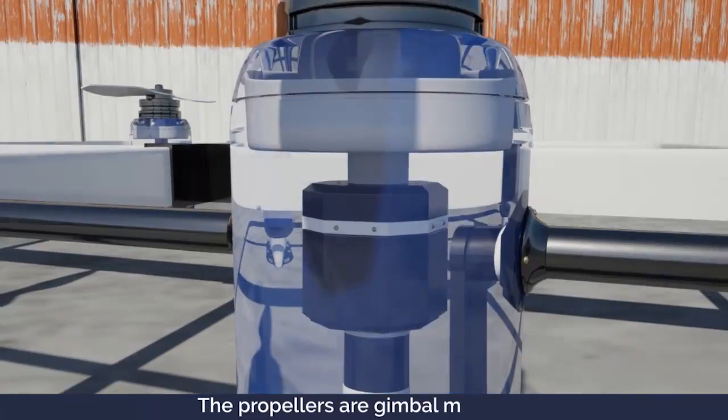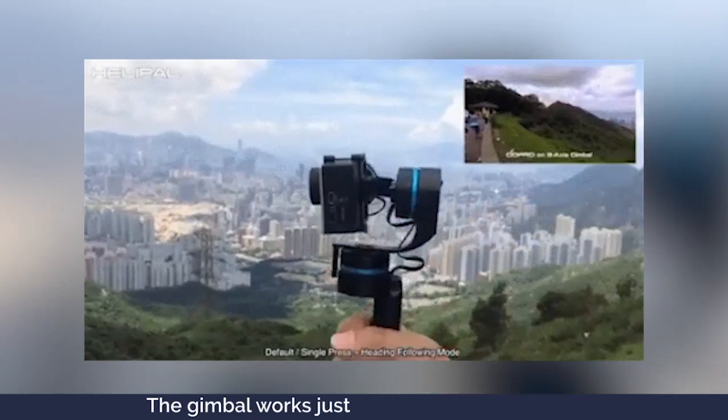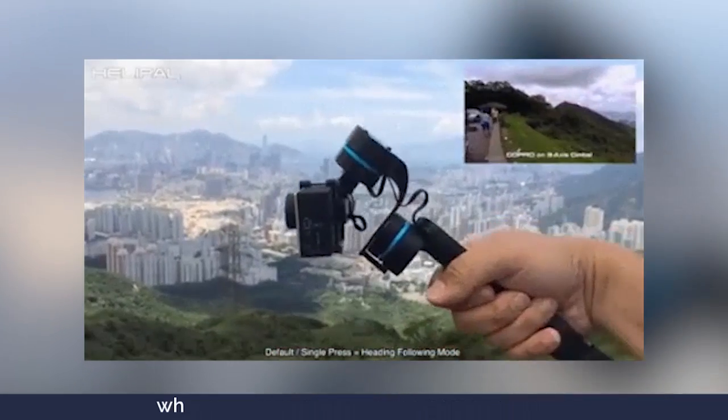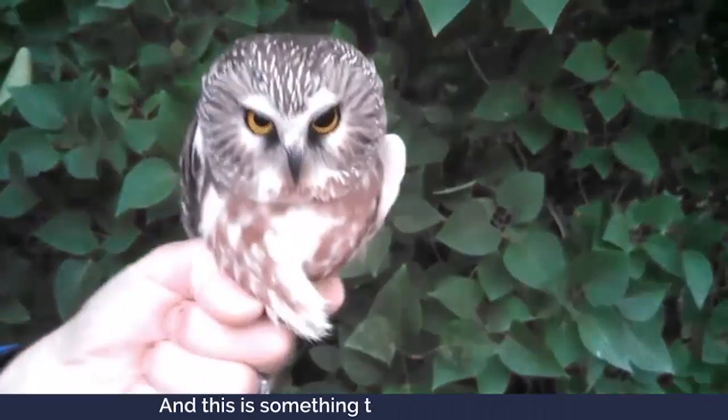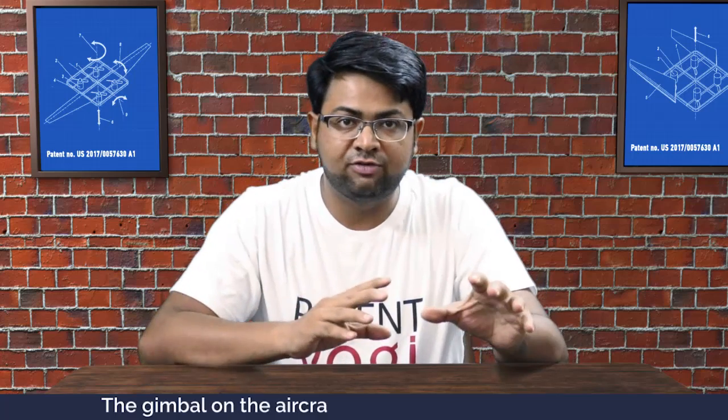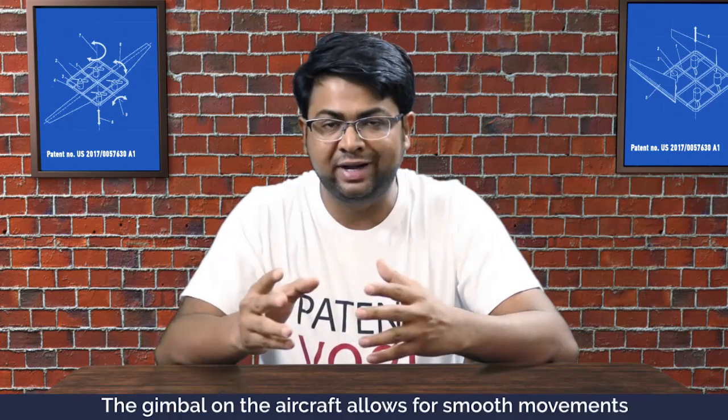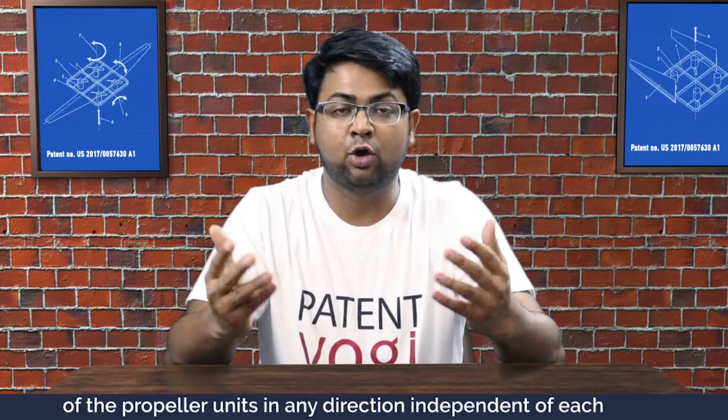The propellers are gimbal mounted. The gimbal works just like the camera gimbals which allow for smooth camera movements, and this is something that owls do naturally. The gimbal on the aircraft allows for smooth movements of the propeller units in any direction independent of each other.